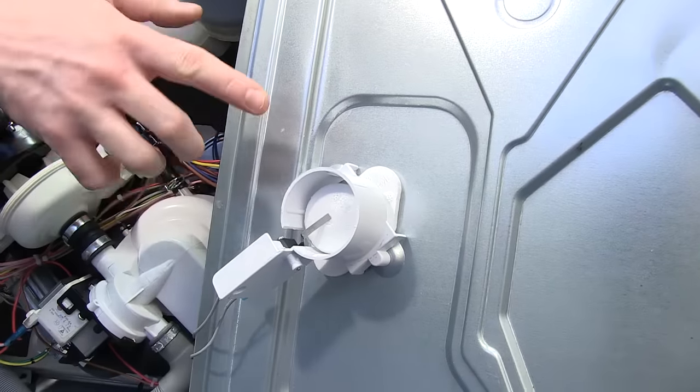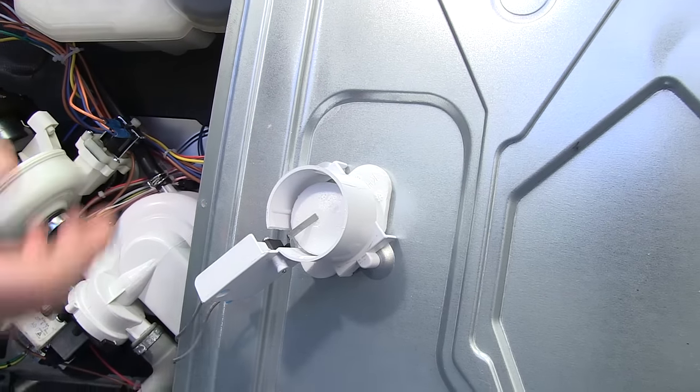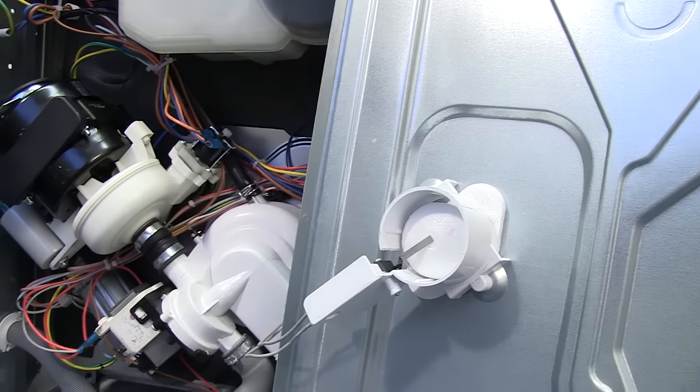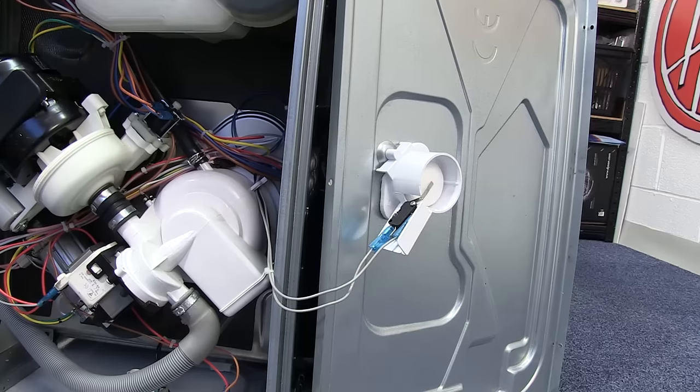Most dishwashers will have an anti-flood device connected to the base of the machine. In this instance it's not necessary to remove it as it has long enough wires that I can simply move the device and the base out of the way.